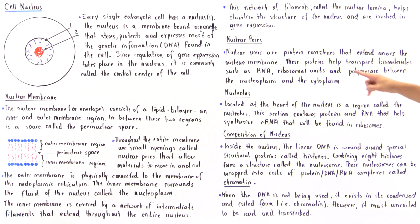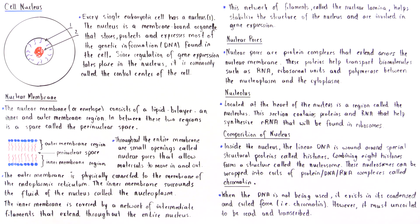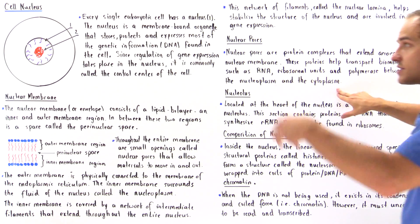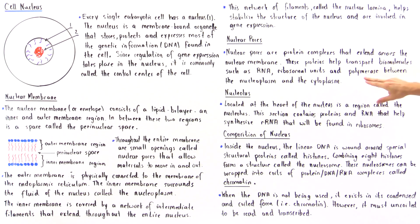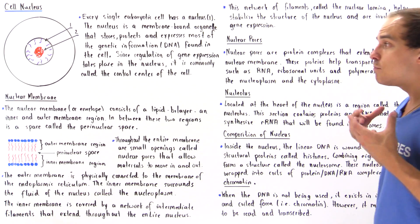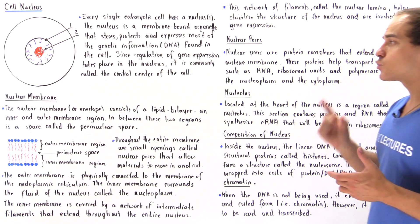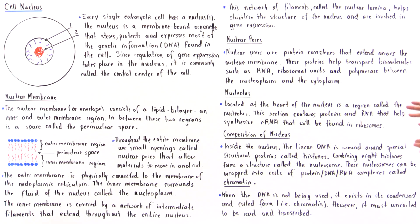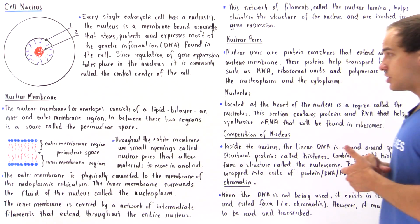These protein complexes help transport biomolecules such as RNA, ribosomal units, ribosomal proteins, as well as polymerase between our nucleoplasm and our cytosol, the cytoplasm, this region of our eukaryotic cell. A polymerase is basically a type of enzyme, a type of protein that plays an important role when we translate, replicate, or transcribe our DNA molecules. We'll discuss that when we discuss replication, translation, as well as transcription.